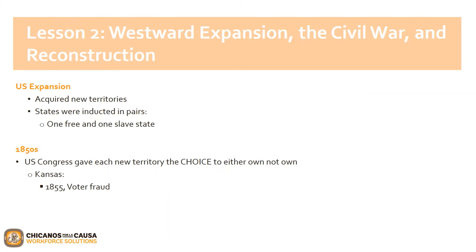As the United States grew, there was ongoing conflict with new territories regarding slavery. The United States decided that recently acquired territories would alternate on slavery — one territory would be a free state and the other a slave state. However, in the 1850s, Congress decided to shift the decision to the states themselves. Kansas was struggling with their choice, and representatives from the North and South region fled there to help. It only worsened things. In a vote in 1855, there were discrepancies due to voter fraud by pro-slavery supporters. Consequently, violence escalated between abolitionists and pro-slavery forces, which eventually spread to the entire Union.